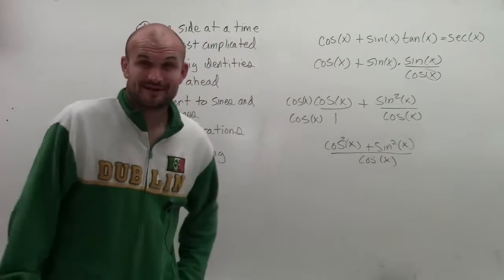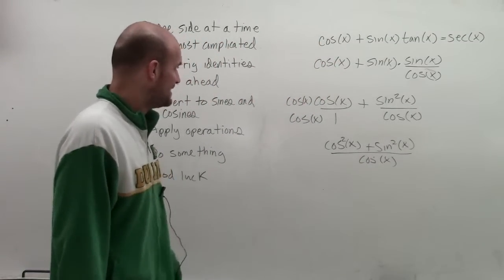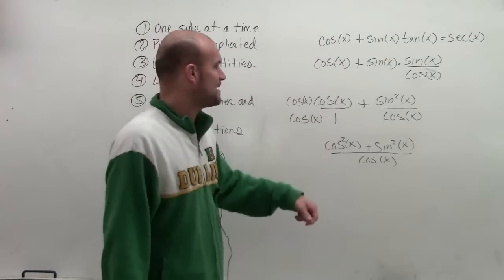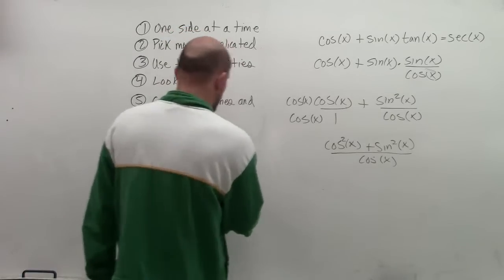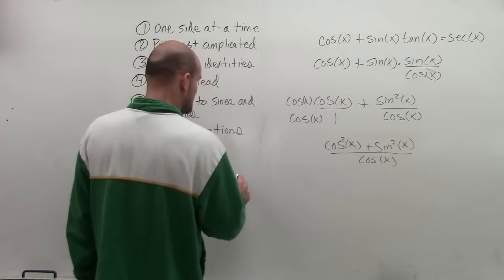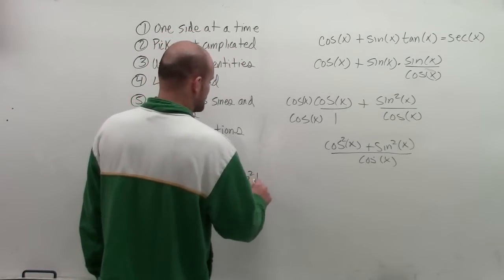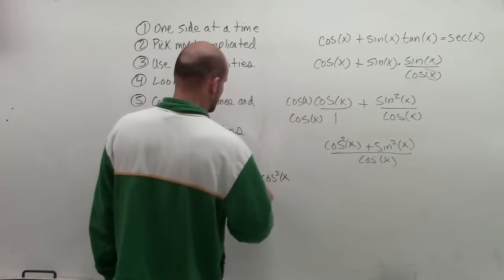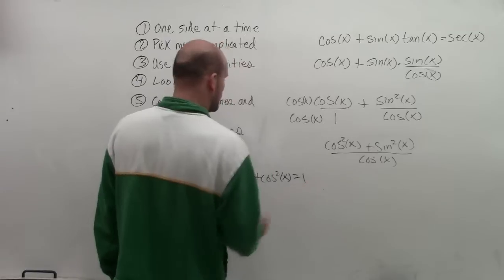Okay, seems like I'm just keeping on getting more and more complicated. But now, let's go, well, I know I can use my Pythagorean identity for this. So remember, my Pythagorean identity for sine, cosine squared, is going to be sine squared plus cosine squared of x equals 1.